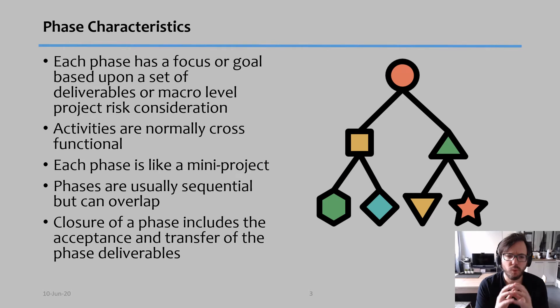So what are the characteristics of a phase? Well, every phase will have a focus or a goal that is based upon the set of deliverables or macro level project risk consideration. In other words, at the end of each phase, there is something that you must achieve. And the activities that you have in each phase, they're not always related to the same department. You typically have activities from all the different departments. You will have activities that are more related to finance, activities that are more related to engineering, activities that are more related to other things.